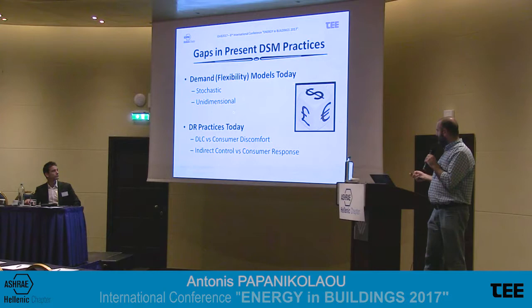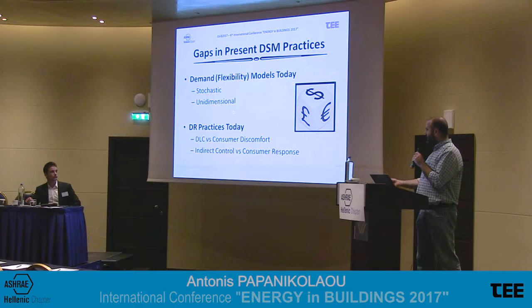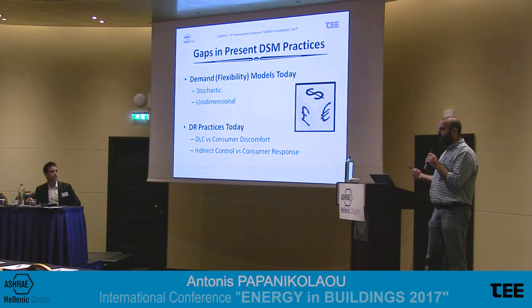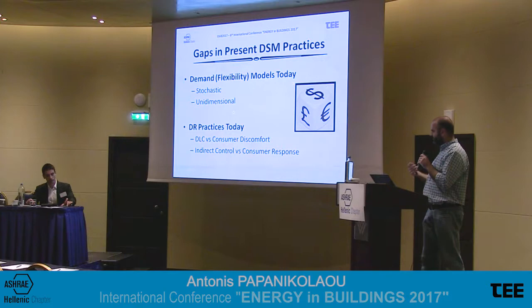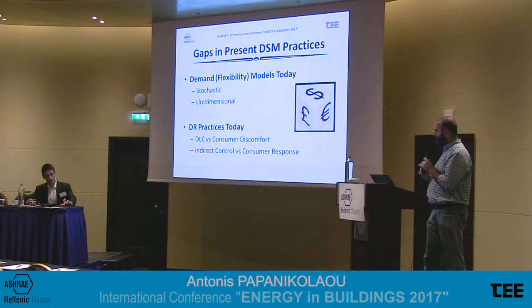The second main technique is indirect control, which basically means that the grid operator will send a signal to the human living or working in the building saying that I need you to change your consumption profile. But whether that happens or not is entirely up to the human, whether they actually take the manual action to change the consumption profile. The experience so far is that the first approach works really well in terms of performance and effectiveness for the grid, but nobody wants to use it. The second one does not work well, but of course everybody wants to have control.